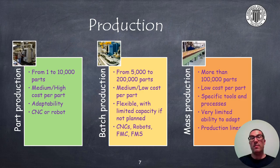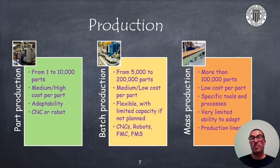For high production volumes exceeding 100,000 parts, it is generally more convenient to use specific production lines for mass production, with the advantage of a low cost per part, but with no or very limited adaptability.